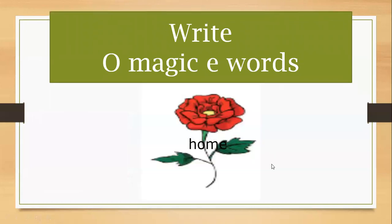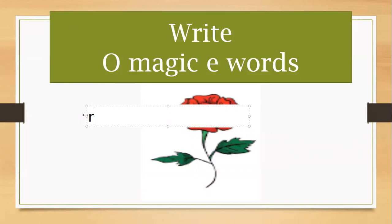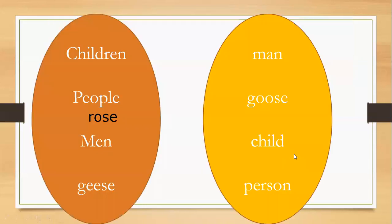Let's go next. What about this picture? Let's write O magic E words. What's this? This is rose. Excellent. We have O with the magic E, making it long. Rose. Again, rose. Excellent.